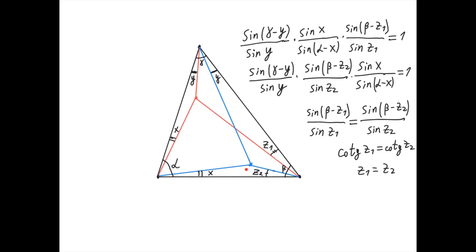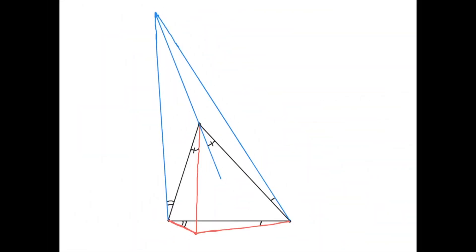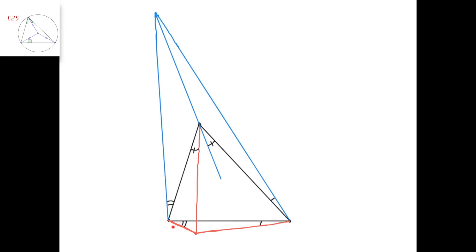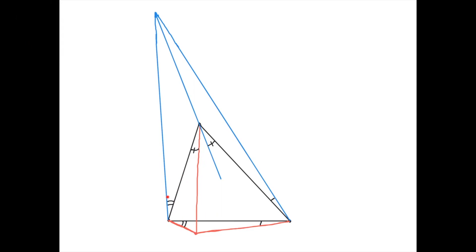Therefore this blue point is the isogonal conjugate of the original point with respect to the triangle. It's good to know that isogonal conjugates exist even when the two points are outside the triangle. For example, take a point outside the triangle — its isogonal conjugate is another point such that the connecting lines are isogonal at each angle, and this angle equals this angle.